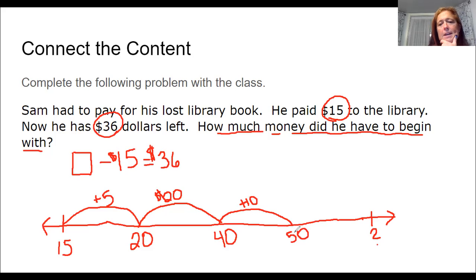Okay. And then let's see, that's 20, 35. I still need to add one more, right, to get me to this unknown number. So I'm going to add one. And that gets me to 51. So the amount of money that he had before he paid for his library book was $51.